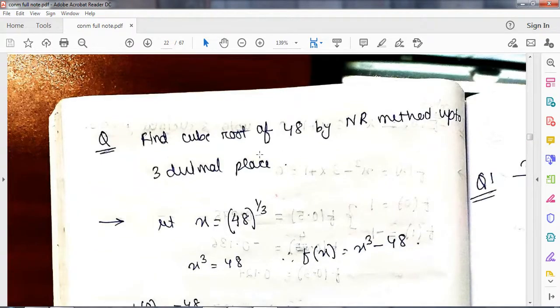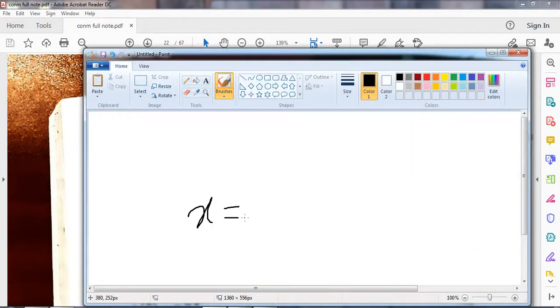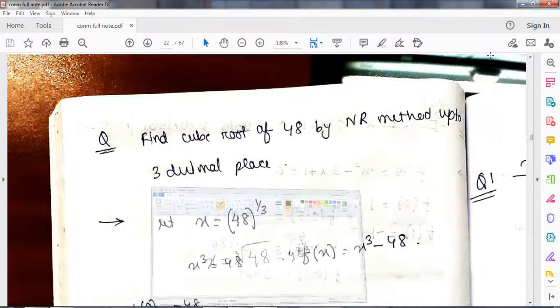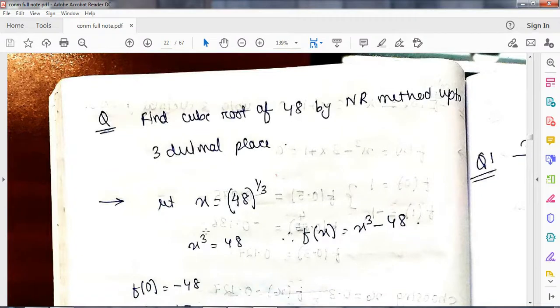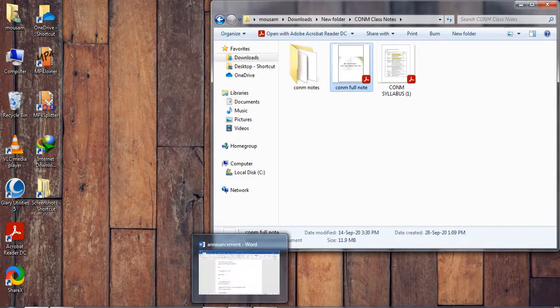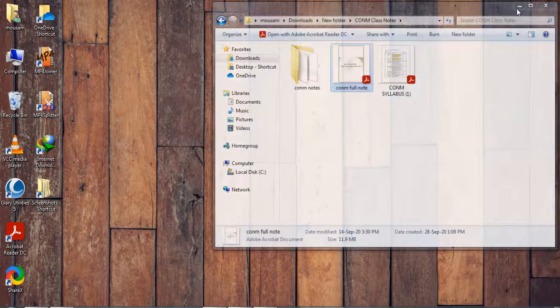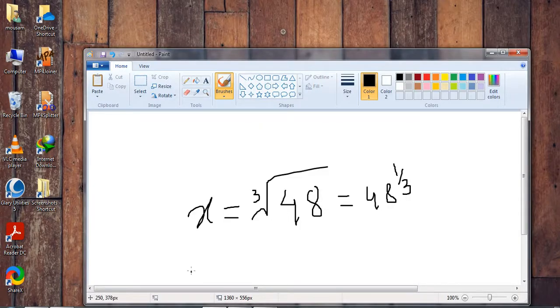We will assume that cube root to be x. As I have written, x is equal to 48 to the power 1 by 3. It is equivalent to cube root. So what I have done is that I have assumed x is the value and it is basically the cube root of 48. Now once I have written it in this manner, what I can do is that I can make it to be x cube is equal to 48. If I cube it all the way, then it becomes x cube and this becomes 48 only.